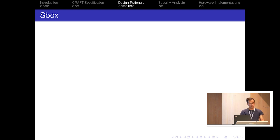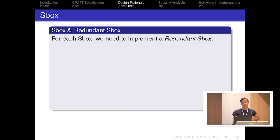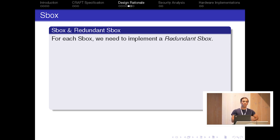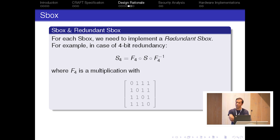For other round function components, we searched exhaustively through all options and chose the ones that provide the most security. Regarding S-box selection: each S-box in the CED construction needs to be implemented with a redundant S-box. For example, in the case of 4-bit redundancy, S-box S needs to be implemented together with S4, which is defined using a matrix F4 that is part of the generator matrix for extended Hamming code, able to detect up to three-bit fault injections.